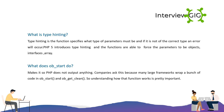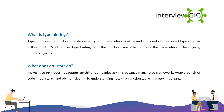What is type hinting? Type hinting is when a function specifies what type of parameter must be passed, and if it is not of the correct type, an error will occur. PHP 5 introduced type hinting, allowing functions to force parameters to be objects, interfaces, or arrays.